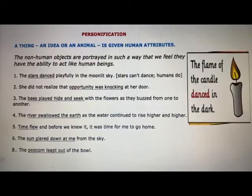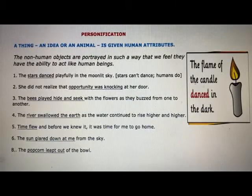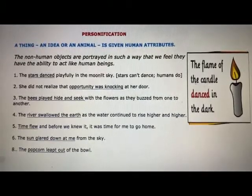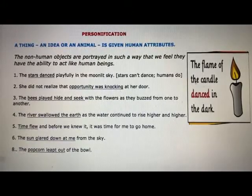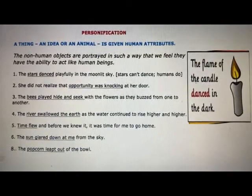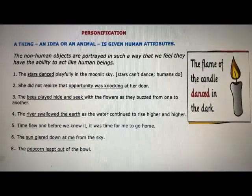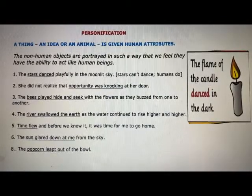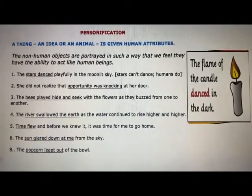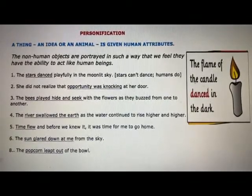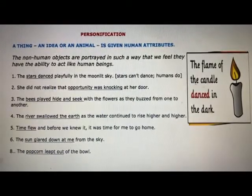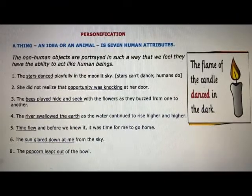The next poetic device is personification. A thing, an idea, or an animal is given human attributes. For example, 'The flame of the candle danced in the dark.' 'The stars danced playfully in the moonlit sky' — obviously the stars cannot dance; humans do. 'She didn't realize that opportunity was knocking at her door.' You can pause the video and go through the sentences. Personification means a thing, an idea, or an animal is given human attributes.